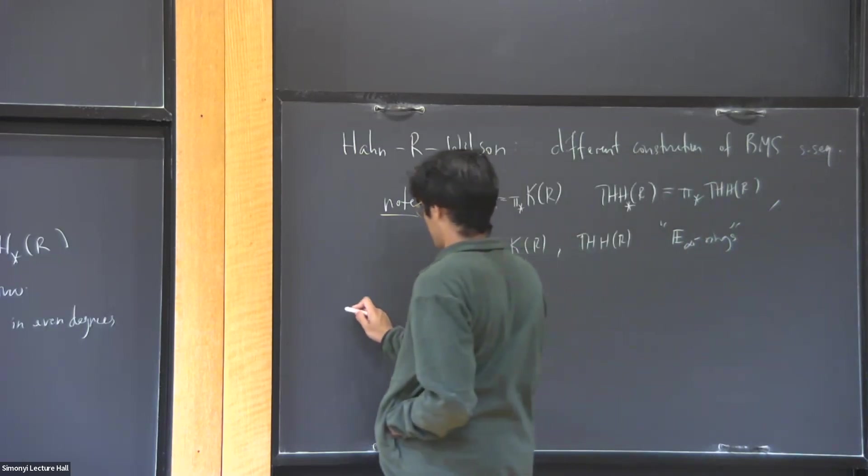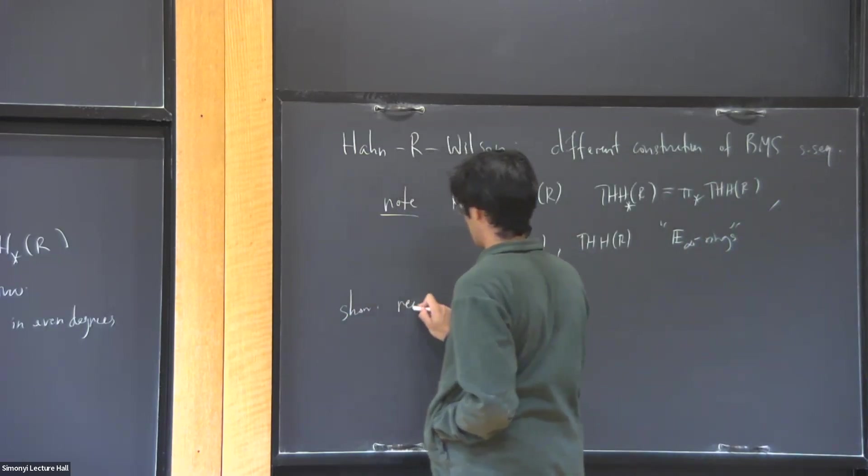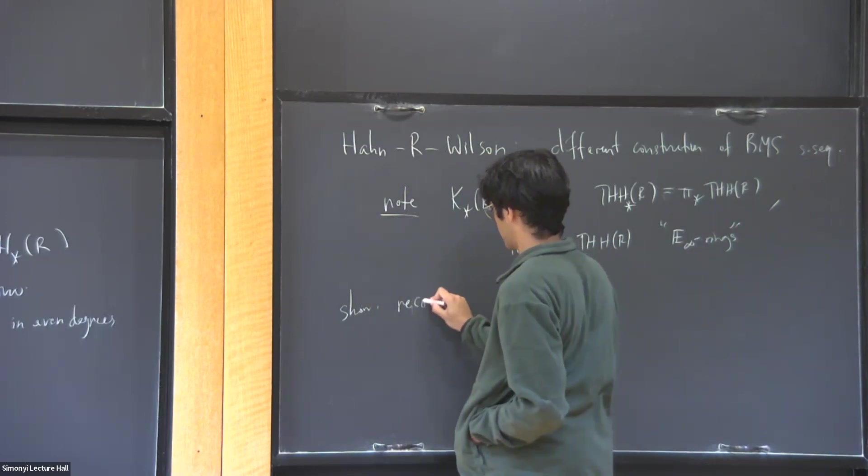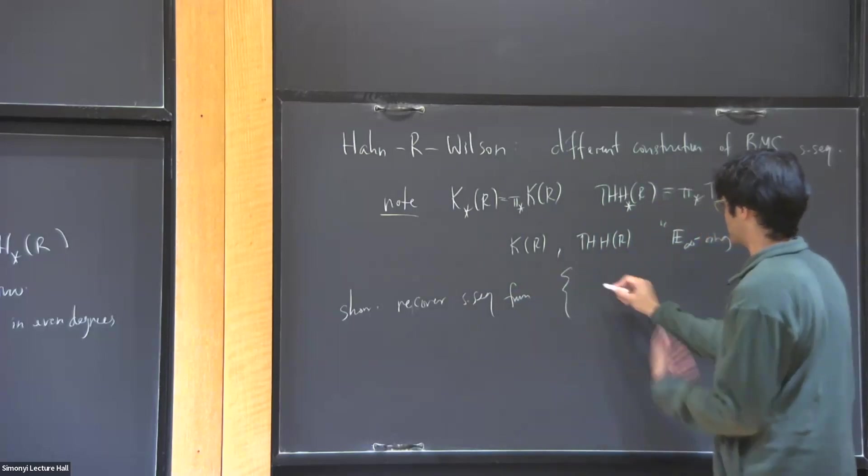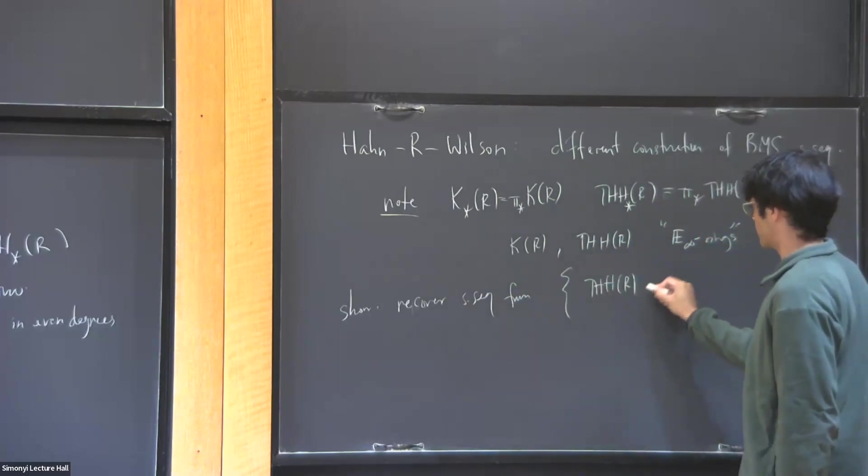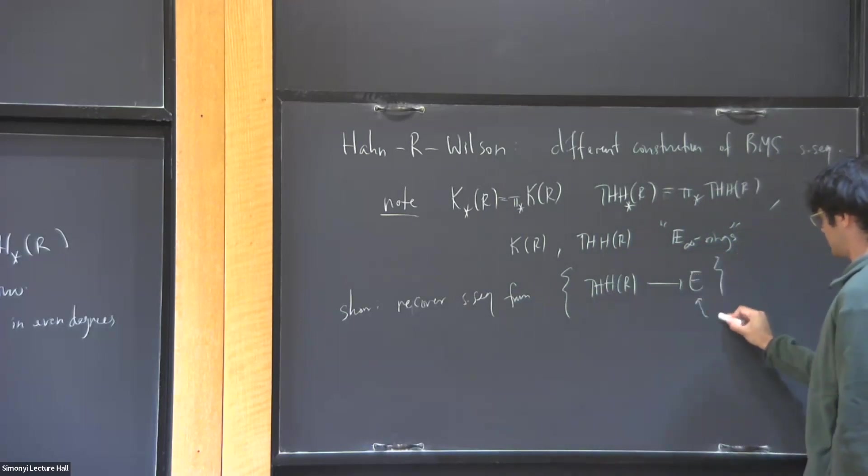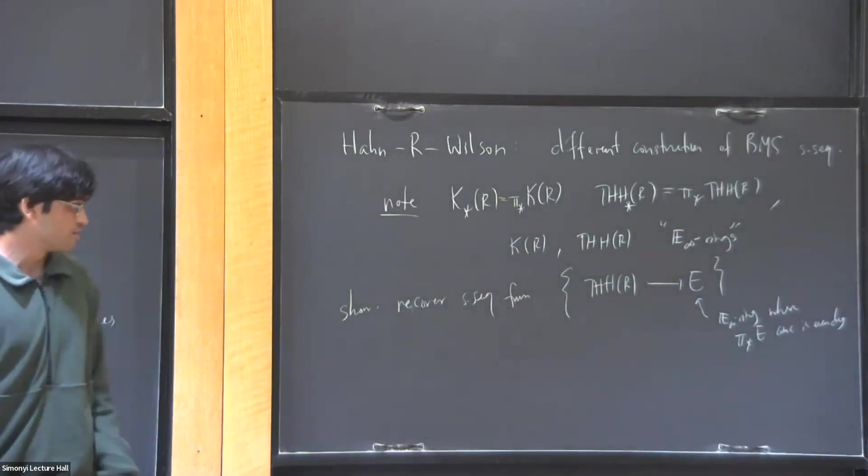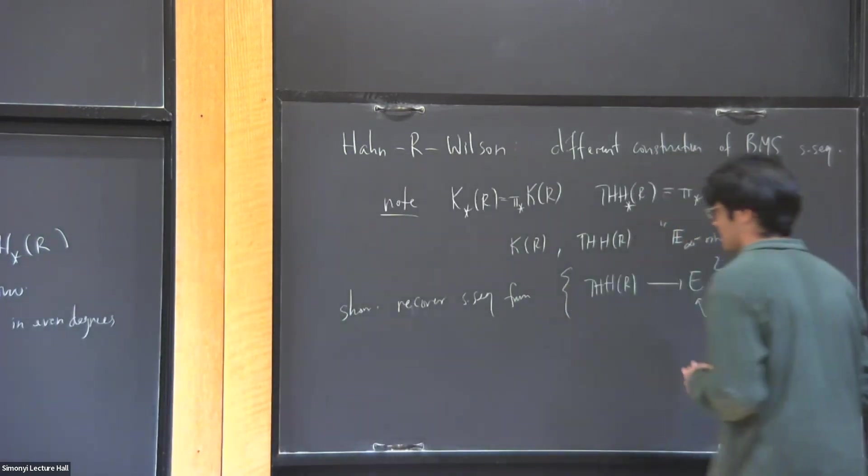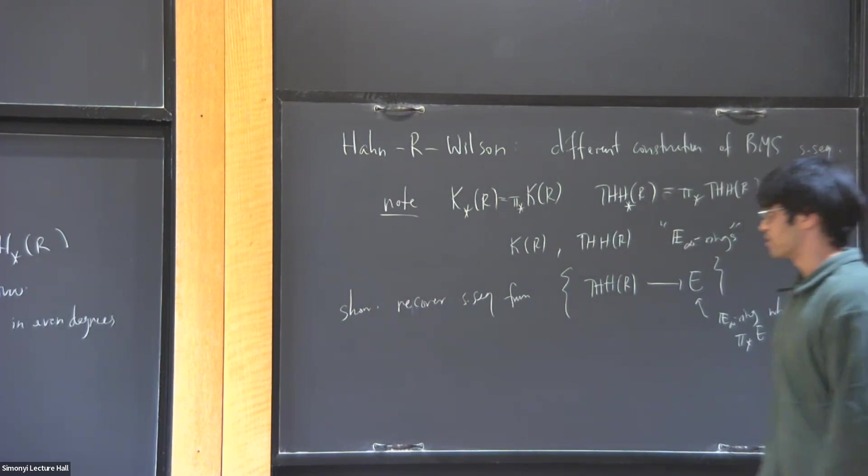All right. And our idea is, so what we show is, we recover these spectral sequences from the following idea. Just consider all maps of the infinity rings from THH of R to E, where E is an E-infinity ring. So that's some kind of space where its homotopy groups are concentrated in even degrees. And by recovery, I mean, there's some very formal process. You consider all these things and you do something very formal. And then we show that there's a very formal construction by considering these things. And we show that you end up with the same spectral sequence that Burklund and Scholze did.